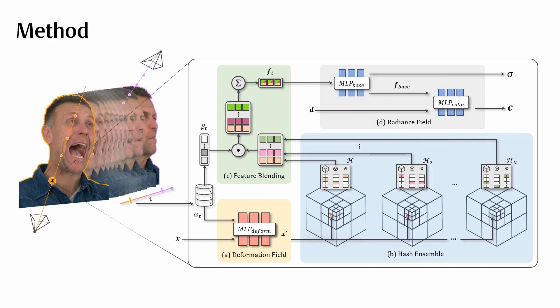Taken together, the deformation field facilitates modeling rough motion, such as head movements, while the hash ensemble adds fine details to the reconstructions.